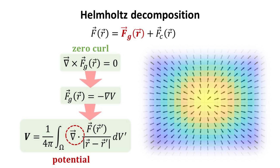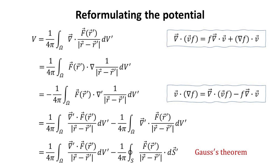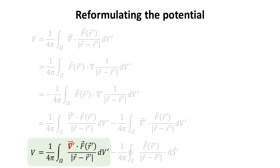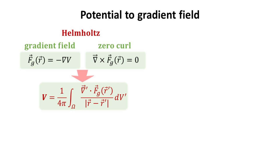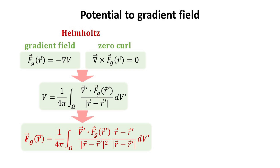Starting from where we left off on gradient fields, our next task is to rewrite the formula for the potential such that the divergence is in R' instead of R. This can be done with the help of some vector calculus identities, as shown. We indeed manage to get an expression for V where the divergence is in R' instead of R; however, it incurs an additional surface integral term. But if the field is well-behaved and if we take the integration volume over all space, the surface term should diminish. To get the expression for the gradient field, we just need to take the gradient of the potential V, and with the help of the identity as highlighted, we arrive at the final expression for the gradient field.